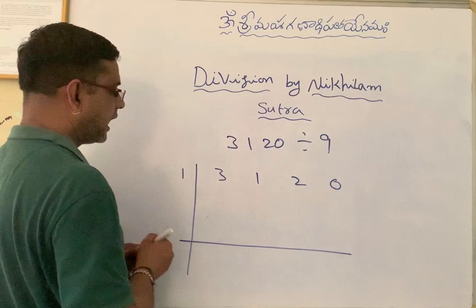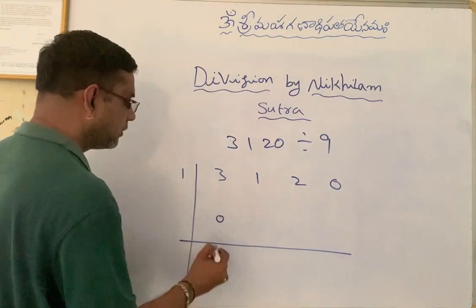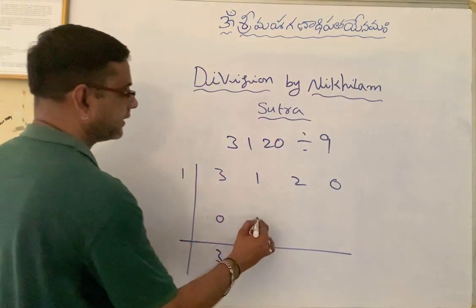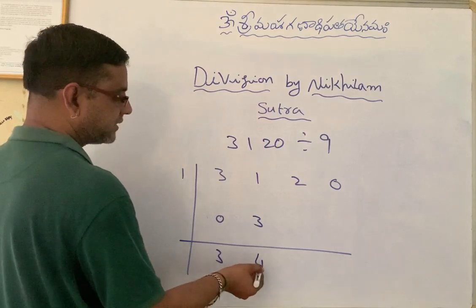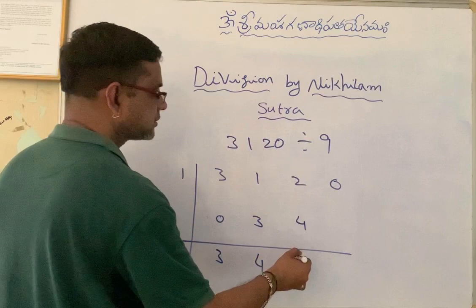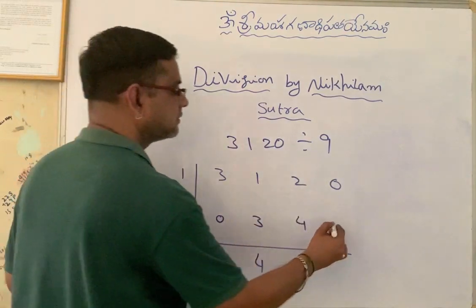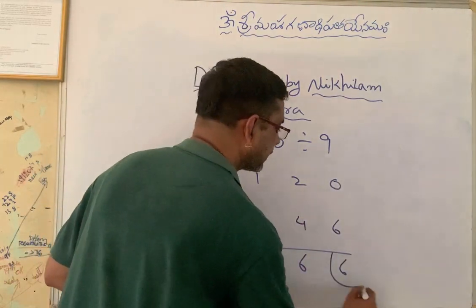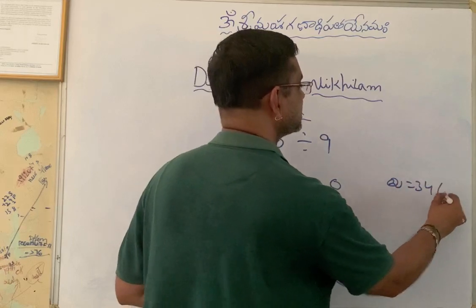As I told you before, always first put 0 over here. 3 plus 0 is 3. Multiply 3 with Nikhilam: 3 ones are 3. Write it over here. 1 plus 3 is 4. Multiply this 4 with Nikhilam: 4 ones are 4. Write over here — 6. Multiply 6 with Nikhilam: 6 ones are 6. Write over here. Now add: 0 plus 6 is 6. So the remainder is 6 and the quotient is 346.